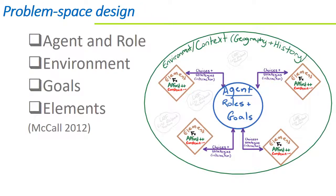Designing an agent-based historical Twine can really benefit from a problem space approach. Thinking about the agent as being in a historical problem space can be a helpful way for considering the elements and details that need to be in a historical Twine. There will be a historical agent — an every-person or a specific agent — in a virtual environment or situation. They will make choices based on their goals and their perception of environmental elements, and their ability to either capitalize on those elements or mitigate the effects of those elements. Even the design of simple branching text can be clarified by thinking about the agent in a problem space with goals, elements that they need to benefit from or work around, and an environment that they're working in.